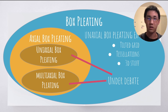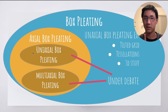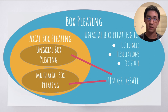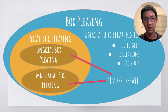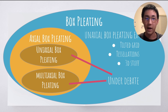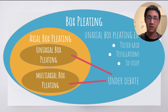For now, you can assume it's uniaxial box pleating. Uniaxial means there's one axis; unaxial means there is no axis — don't get confused, the spellings look similar. For most of the things we're going to be doing, there's going to be only one axis. Even if it actually is multiaxial, you can think of it as only one, and I'll explain what that means later.